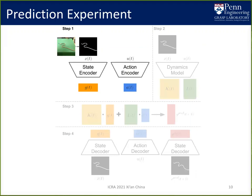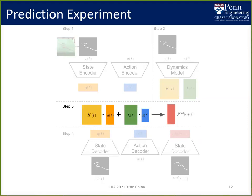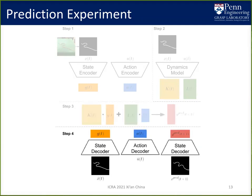We break down the prediction framework in four steps. Step one: we do color space segmentation to get a binary mask from the rope image, then encode the state into latent state using a CNN-based network and encode action into latent action. Step two: we use the dynamics model to get the state matrix k and control matrix l from state and action. Step three: we use locally linear latent dynamics to get the predicted next latent state z-pred t plus one. Step four: we use a decoder to decode the predicted next latent state into the predicted next state.